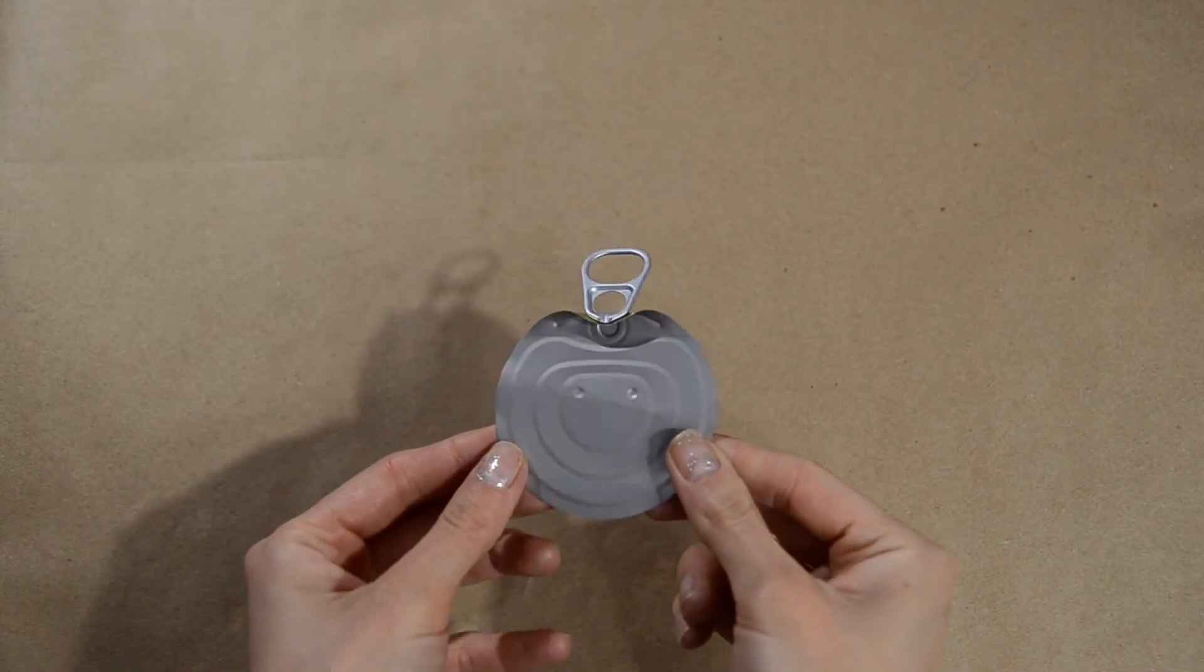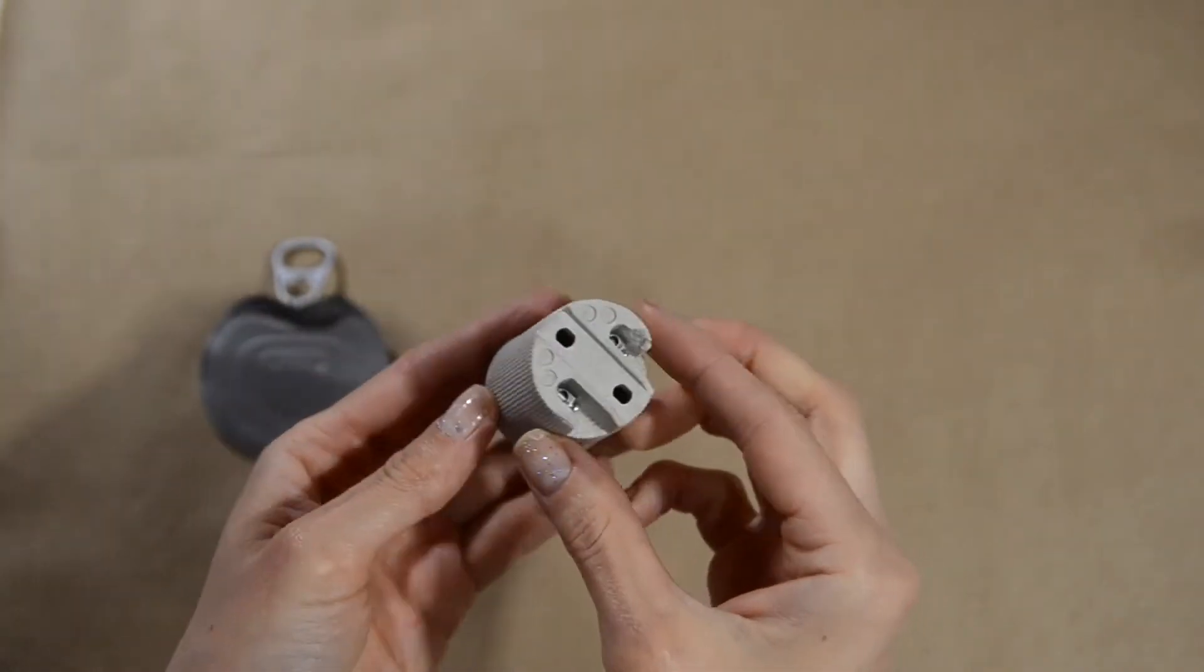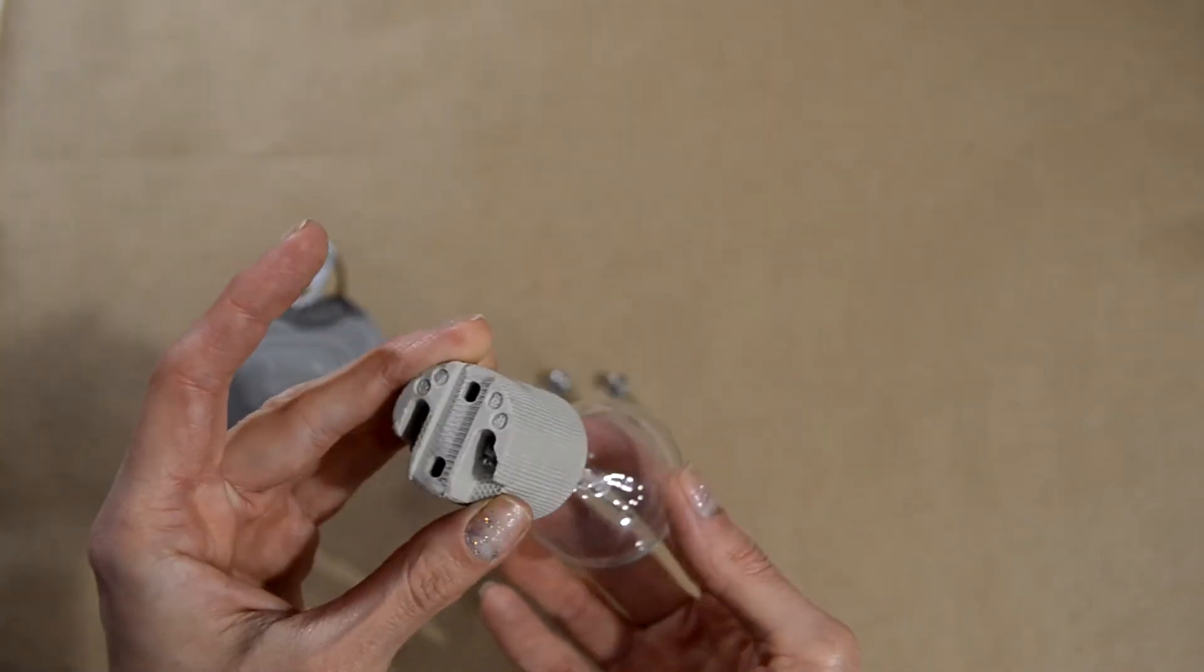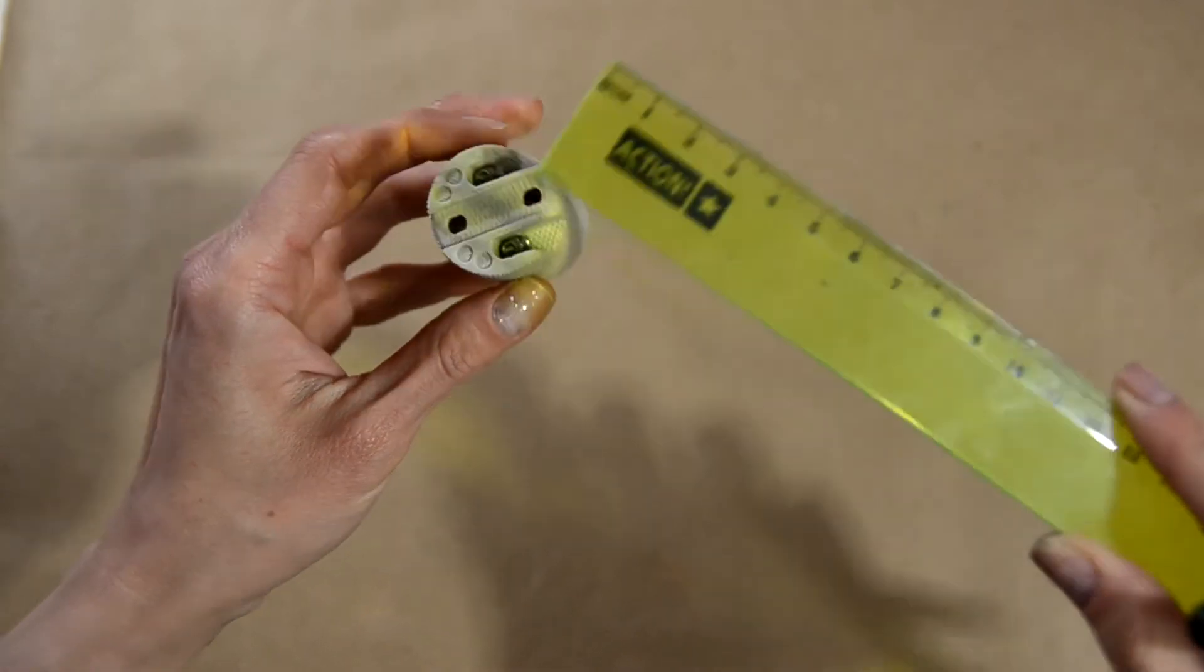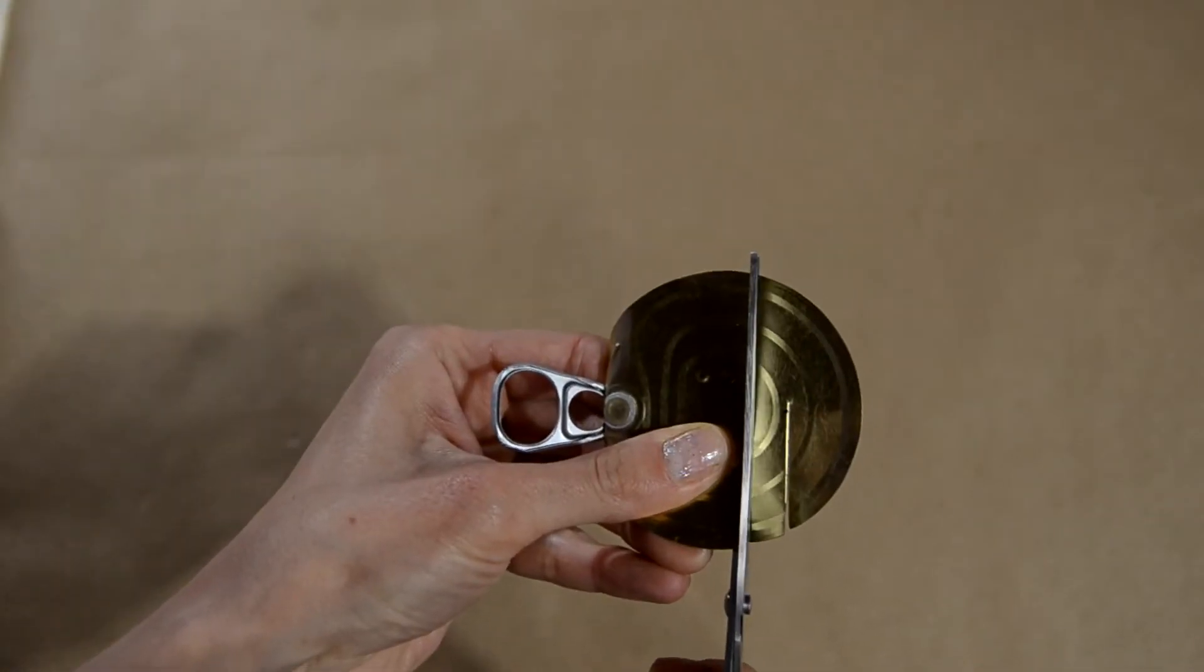Next step is to make a fastener for the receptacle. A small piece of metal like tin will be good enough for it. We cut the required size and make a pair of holes for the cable.